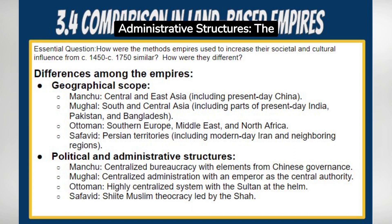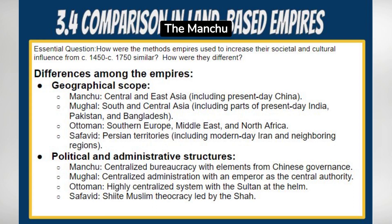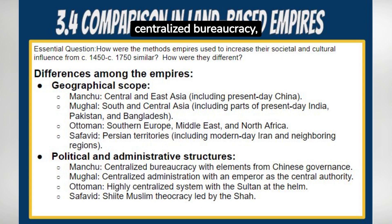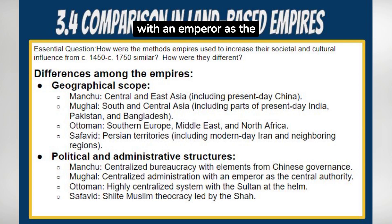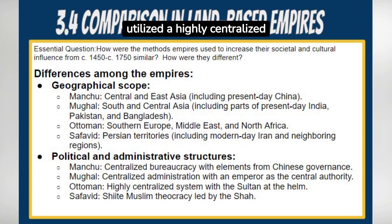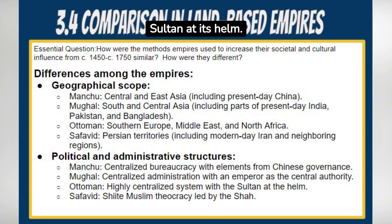Political and administrative structures: the empires had varying political and administrative structures. The Manchu Empire established a centralized bureaucracy, adopting elements from the Chinese governance system. The Mughal Empire had a centralized administration with an emperor as the central authority. The Ottoman Empire utilized a highly centralized administrative system, with the Sultan at its helm.